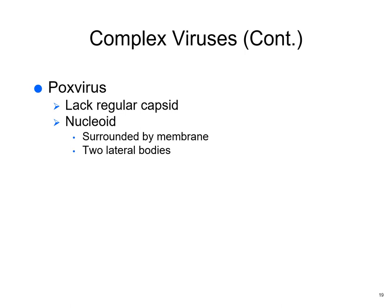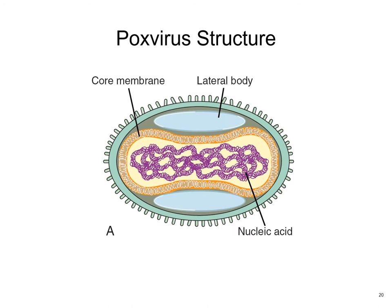Complex viruses also include pox viruses, which lack a regular capsid. They're surrounded by a nucleoid surrounded by a membrane and two layers. The overall structure includes the nucleic acid, lateral bodies, core membrane, and outer capsule.